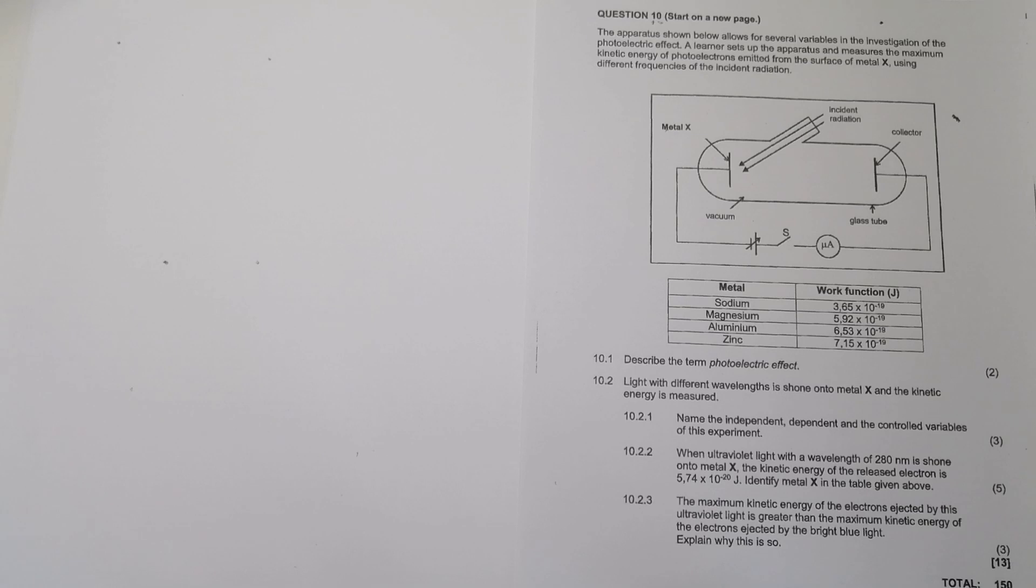All right, so I'm looking at the last question, which is question 10 from the Gauteng paper. So this one has to do with the photoelectric effect. OK, so they say the apparatus shown below allows for several variables in the investigation of the photoelectric effect. The learner sets up the apparatus and measures the maximum kinetic energy of the photoelectrons from the metal surface using different frequencies of incident radiation.